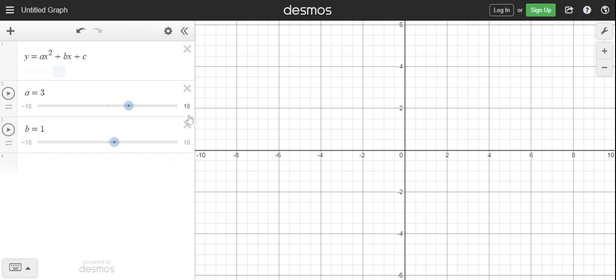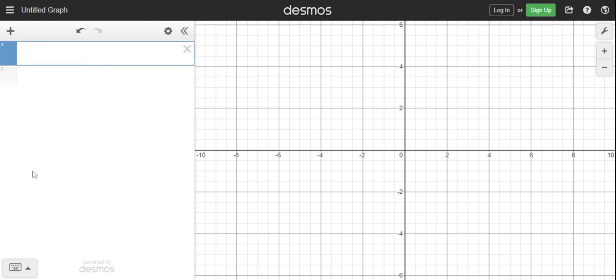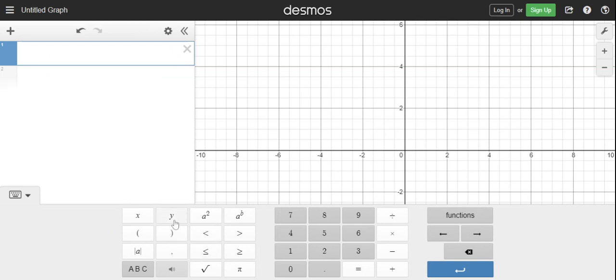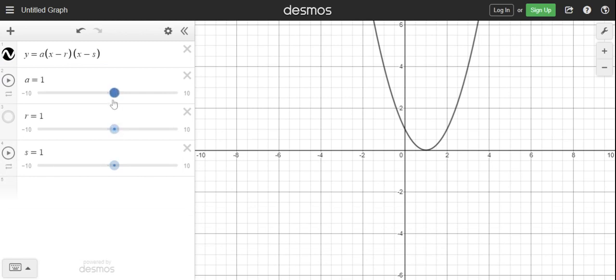We're going to repeat the process for a quadratic relation not in standard form this time, but in factored form. That is y equals a bracket x minus r bracket bracket x minus s bracket. Again you'll see this pop up. You want to click all and a bunch of sliders will appear.